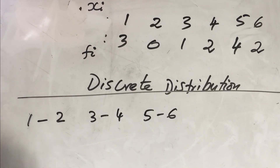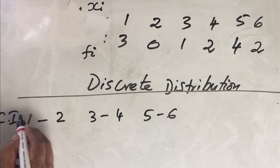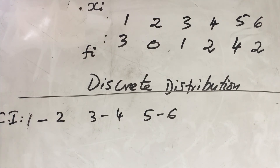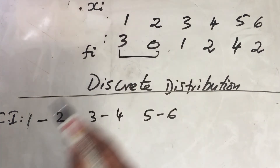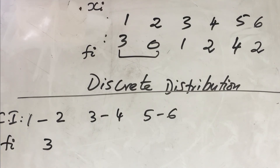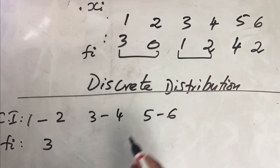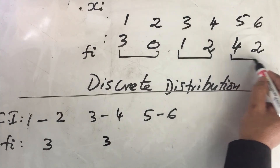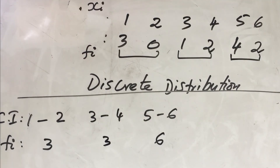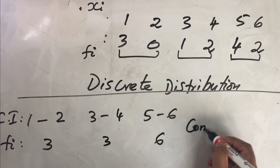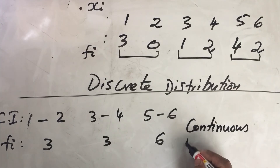This grouping is called a class interval. Three students collected one to two chocolates — that is the frequency, denoted as f-i. Another three students collected three to four chocolates, and six students collected five to six chocolates. This kind of arrangement is known as continuous distribution.